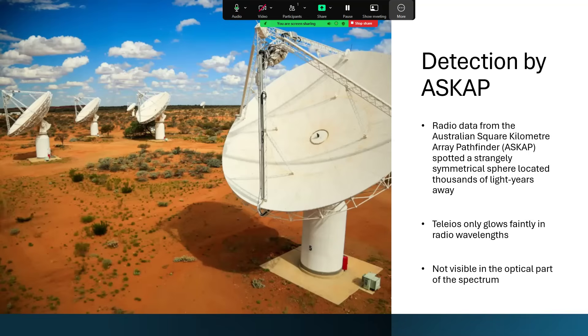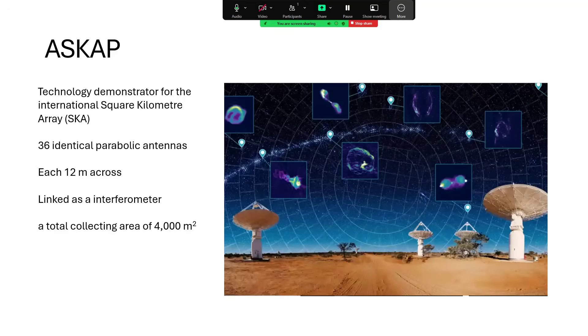Now ASKAP is a technology demonstrator for the full-blown SKA, the Square Kilometre Array, which is going to consist of thousands of dishes in Australia and in South Africa. But here we have just 36 identical parabolic dishes, 12 meters in diameter, that linked together as an interferometer. So using aperture synthesis to create the effect of one much larger disc in terms of resolution, and also adding the area of all the dishes together, you get the area of a larger dish—4,000 square meters of collecting area.